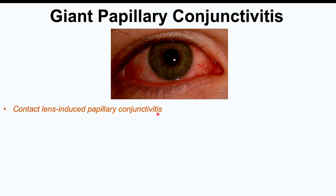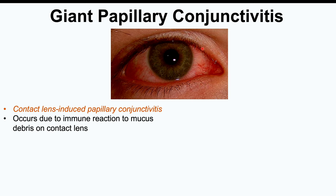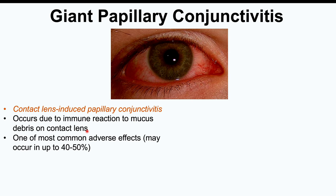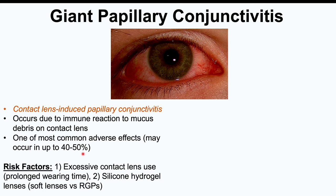Giant papillary conjunctivitis is also known as contact lens induced papillary conjunctivitis. It is conjunctivitis, meaning inflammation of the conjunctiva of the eyes. The conjunctiva is a thin transparent layer that covers the whites of the eyes. This condition is believed to be due to an immune reaction to mucus debris on contact lenses. It is one of the most common adverse effects in contact lens users, occurring in up to 40 to 50 percent of users.